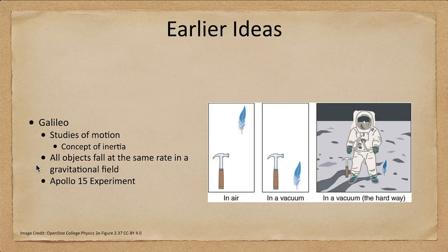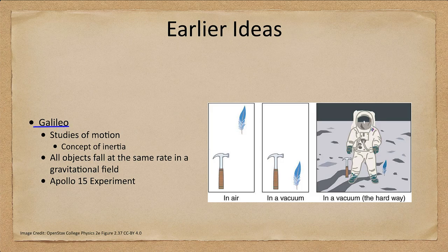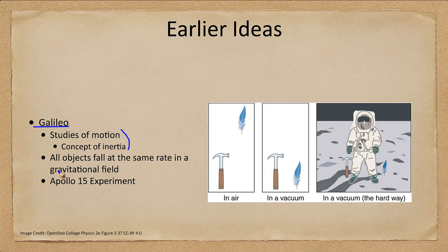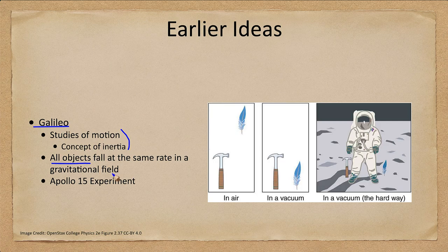So let's go ahead and get started and we want to go back a little bit first and talk about Galileo. Now we talked about Galileo and his telescope in a previous discussion. However we also know that Galileo gave us a couple of other things including the concept of inertia and the idea that all objects fall at the same rate in a gravitational field.